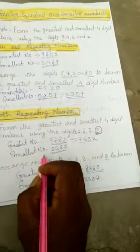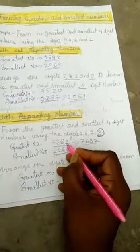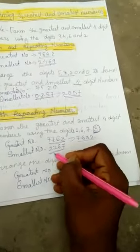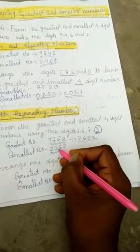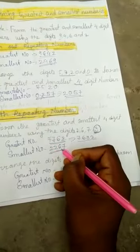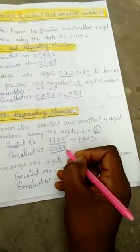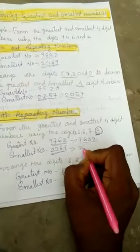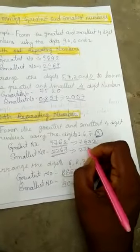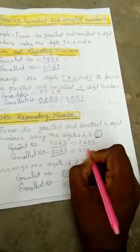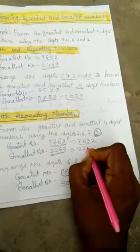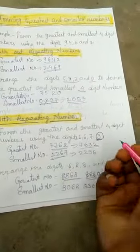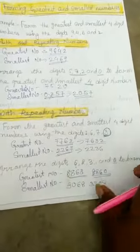For the smallest number, 2 is the smallest digit. Using 2 twice: 2267. You can also write other combinations such as 2237. Any valid smallest arrangement using repeating digits is acceptable.